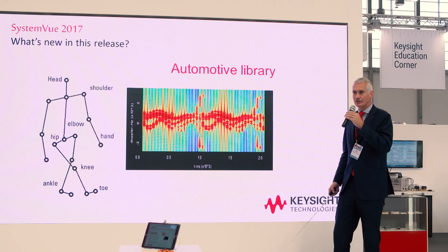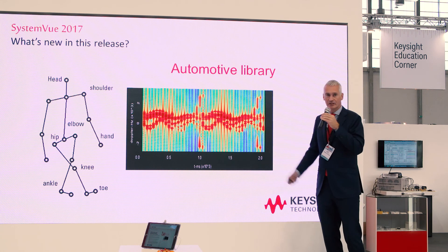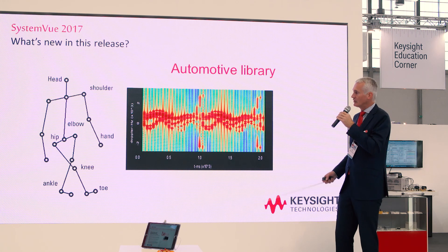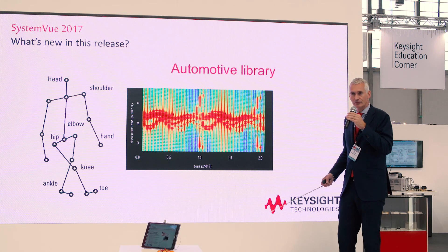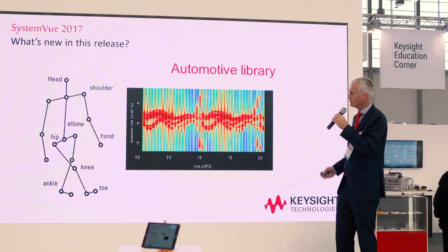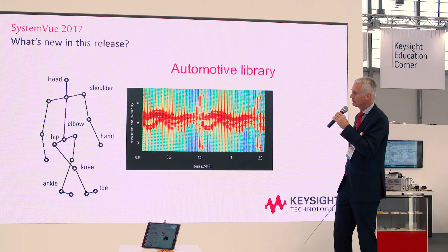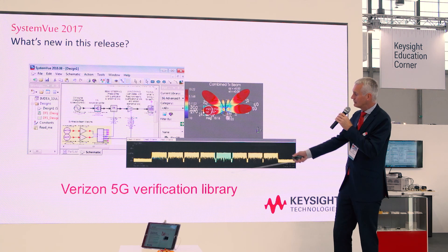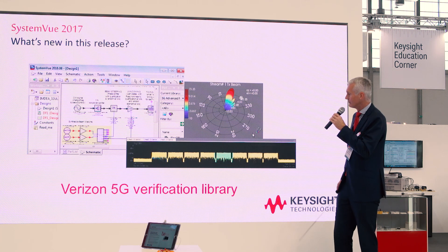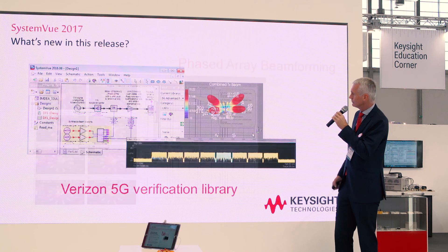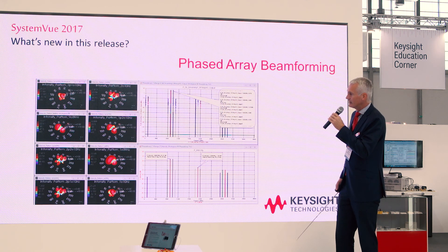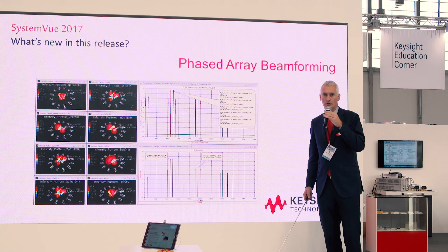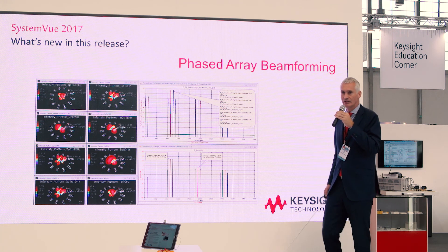Some new things in SystemVue in the latest release: there is an automotive library for creating automotive radar signals and functionality like pedestrian recognition. There is a new 5G Verizon verification library, and new functionality around phased array beamforming for 5G, automotive applications, and defense applications.